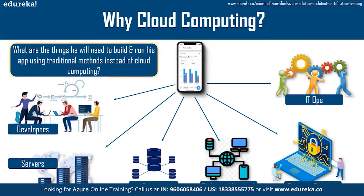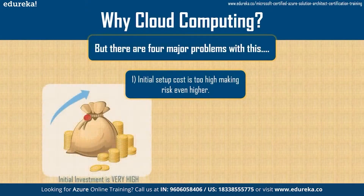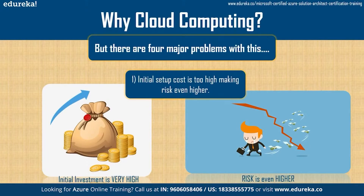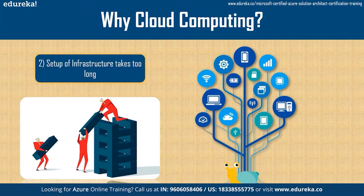John figured there would be four major problems with this setup. The first problem is that owning his own infrastructure would require a huge amount of money, and because of that large investment, it would greatly increase the risk if the app fails. The second problem is that the infrastructure would take too long to set up — he would have to buy all the components, hire IT technicians to install them and connect everything up. So that means more money and more time.